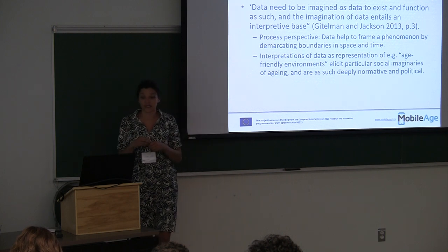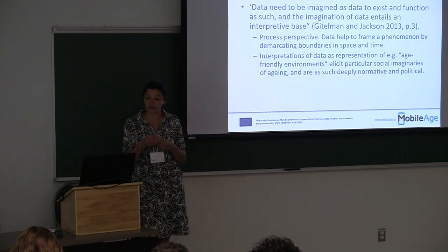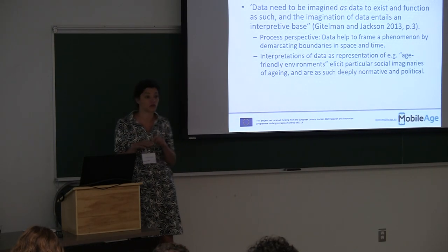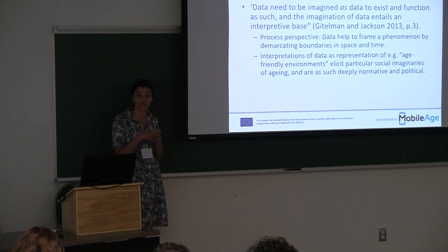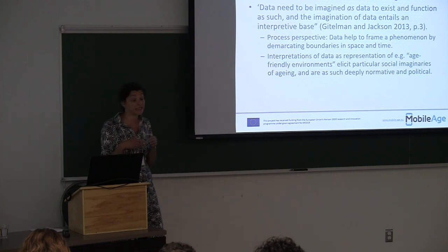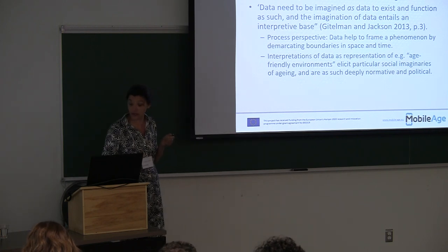To ground this theoretically: data do not just exist via data provided by government or produced by citizens — rather, data are generated. As Gitelman and Jackson say, data need to be imagined as data to exist and function as such, and the imagination of data always entails an interpreted space. From a process perspective, data help to frame a phenomenon by demarcating boundaries in space and time. When thinking about age-friendly environments, this elicits particular social imaginaries about what it means to grow old, particularly ageing in urban spaces.